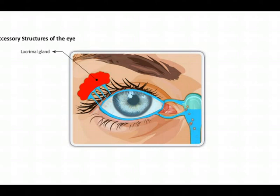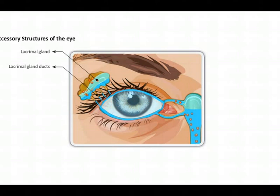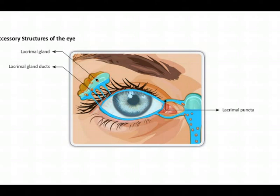The lacrimal gland produces the lacrimal fluid. The lacrimal gland ducts carry the fluid from the gland into the eyes. The lacrimal puncta is the pore through which the lacrimal fluid drains away from the eyes.